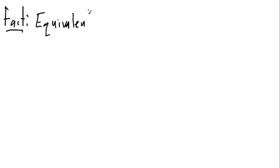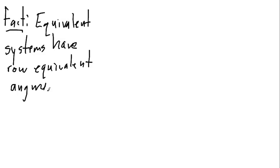Okay. Now, here's the fact. Equivalent systems have row equivalent augmented matrices. So, what this really means is if I start with the system and then I take its augmented matrix and do a bunch of row operations to it and end up with something that looks pretty simple and then take the system that corresponds to that, I will have a system that's equivalent to the first.